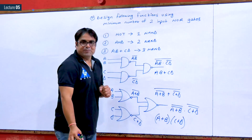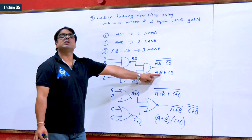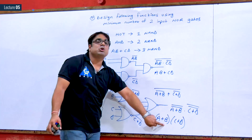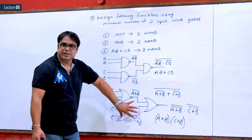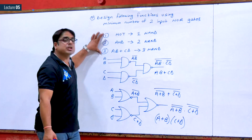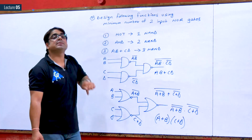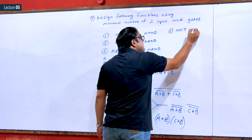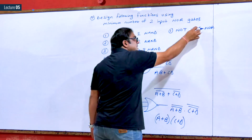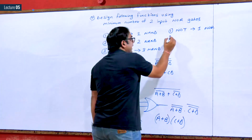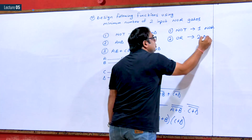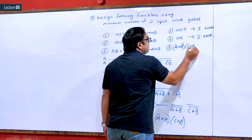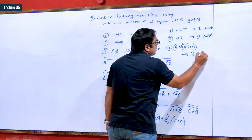The conclusion is clear. We can implement any function of the format AB plus CD using three NAND gates. In the same way, any function of the format A plus B dot C plus D can be designed using three NOR gates. So we have three conclusions for NOR gate: first, NOT gate can be designed using one NOR gate; second, OR gate can be designed using two NOR gates; third, any function of the format A plus B dot C plus D can be designed using three NOR gates.